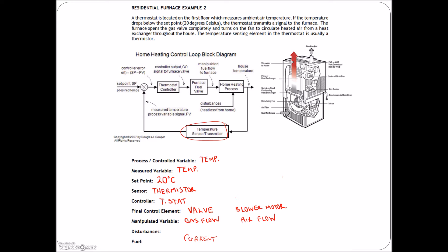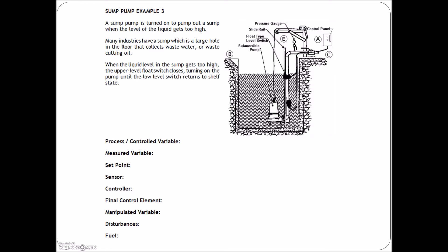Disturbances are just things that are in this loop that we haven't put a sensor in to look at. If we're trying to control the temperature in the house and it gets to the right temperature, but then somebody walks in and opens the door, or somebody on the second floor opens a window — those would be disturbances. There's no way we could put a sensor in, but as soon as that cold air hits the thermostat, it turns on the furnace to compensate. Disturbance example: someone opens the door.